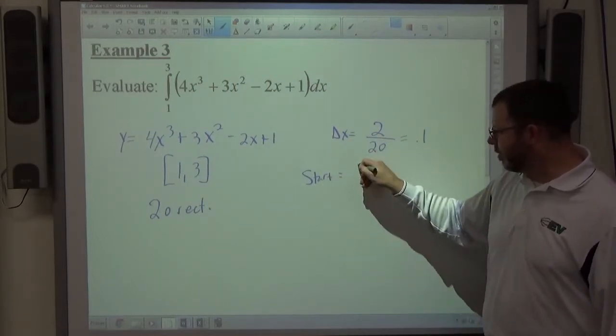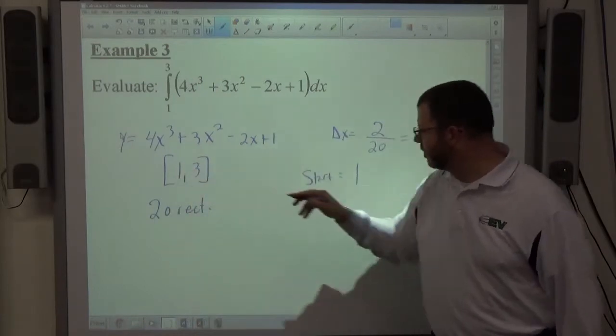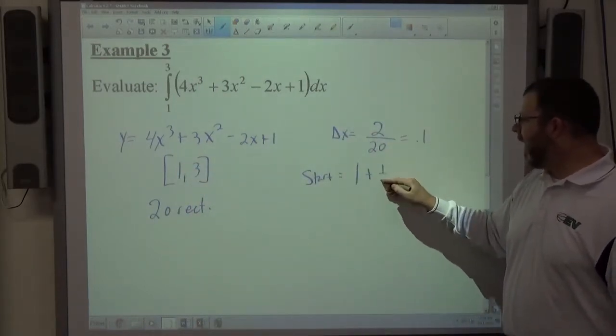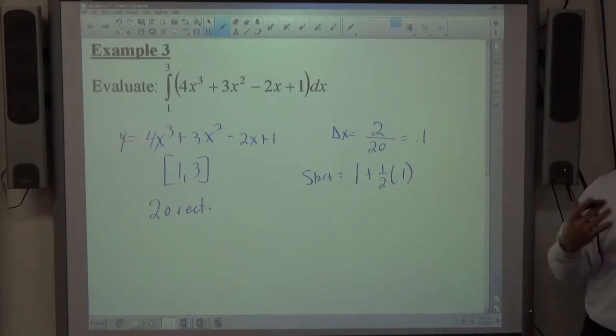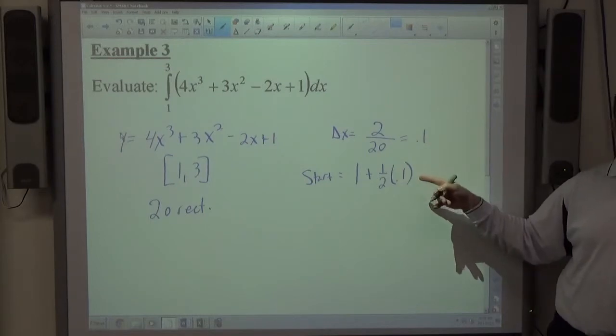My starting point is the first number in my interval, which is 1, added to one half of the interval length. Again, my calculator, my computer can figure that out for me, right? Half of 0.1 is 0.05.